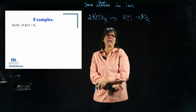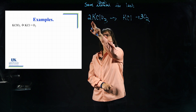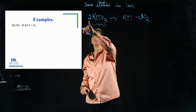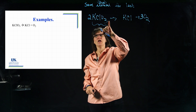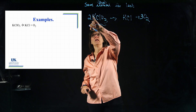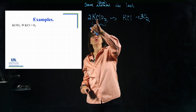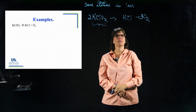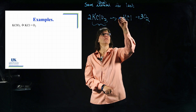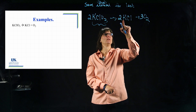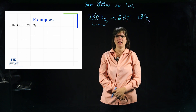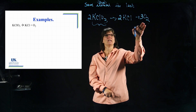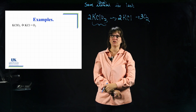That coefficient of 2 in front of KCl applies to the whole thing, giving me two K's, two Cl's, and six oxygens. So now I need two K's on the left — putting a 2 in front of KClO3 gives me two K's and two Cl's, and that's balanced. I thought about the least common multiple to get the oxygen balanced, and then everything else fell into place.